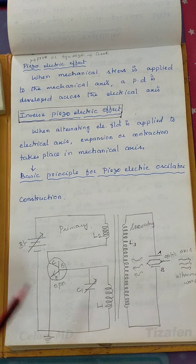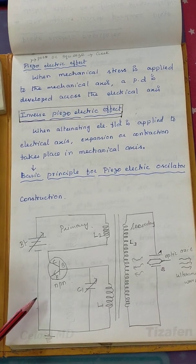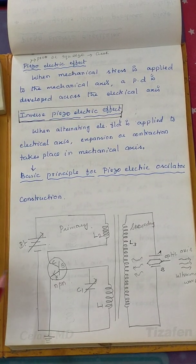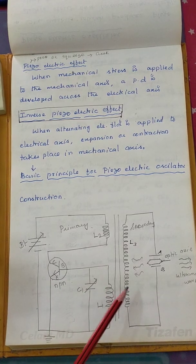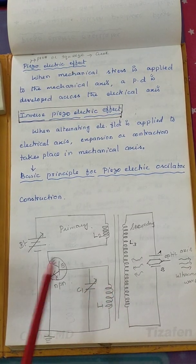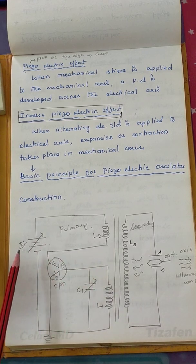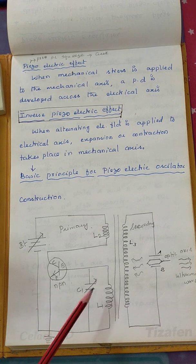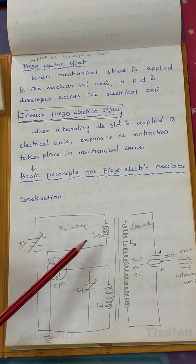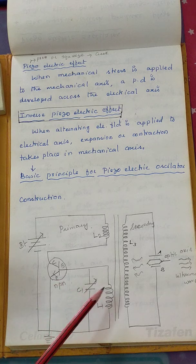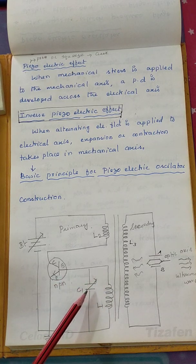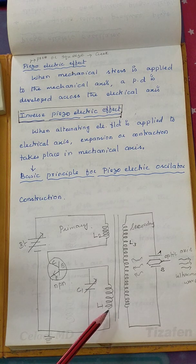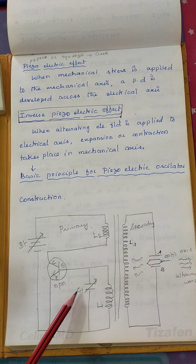Now let us see the piezoelectric oscillator. The schematic consists of two coils — a primary and a secondary coil. The primary coil is connected to the battery. There is an NPN transistor connected to coils L1 and L2, and C1 is a variable capacitor connected across them, forming a tank circuit which has its own resonant frequency.